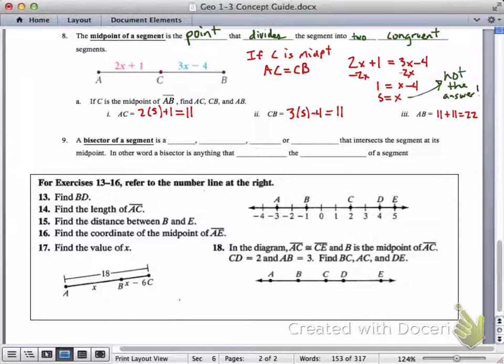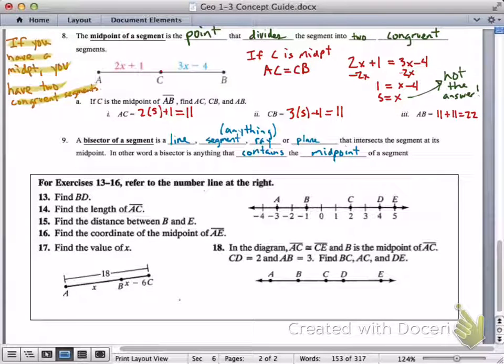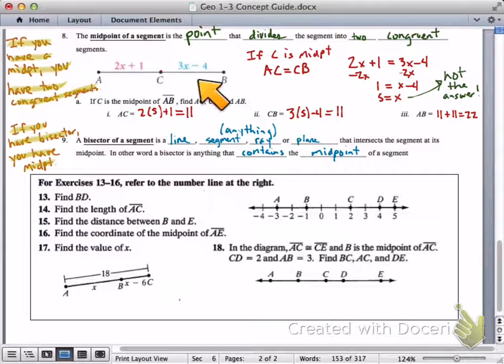One more piece. The bisector of a segment. Here's what you've got to know. This is something we'll be emphasizing. If you have a midpoint, you'll have two congruent segments. That's what a midpoint does. The bisector of a segment is a line, segment, ray, or plane. In other words, it's about anything that intersects the segment at its midpoint. In other words, a bisector is anything that contains the midpoint of a segment. If you have a segment bisector, you have a midpoint. So, these two things are related in that a segment bisector makes a midpoint, which means you'll end up with congruent segments. A segment bisector doesn't make congruent segments. It makes a midpoint. The midpoint makes congruent segments. If that sounds a little confusing, well, it won't after a little while. We'll see this a lot.